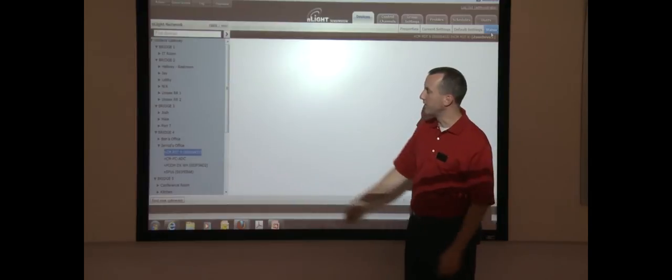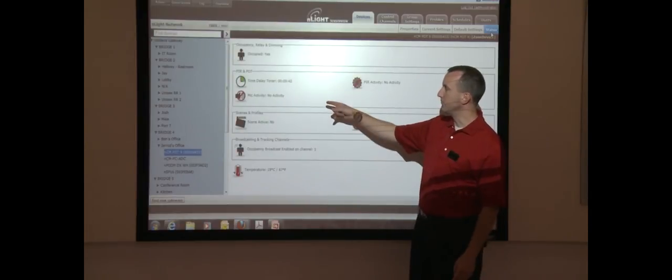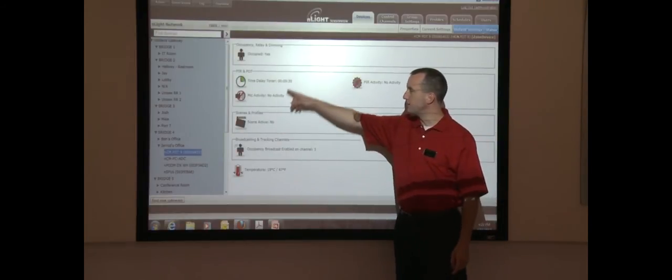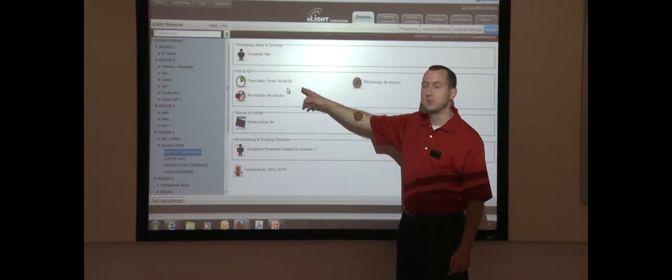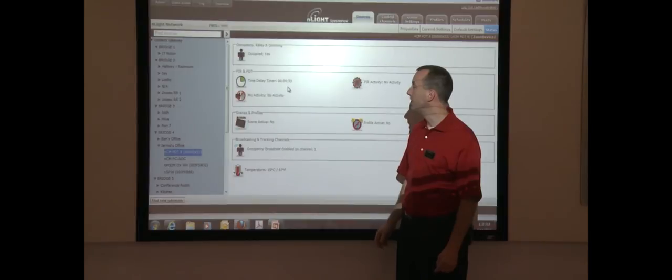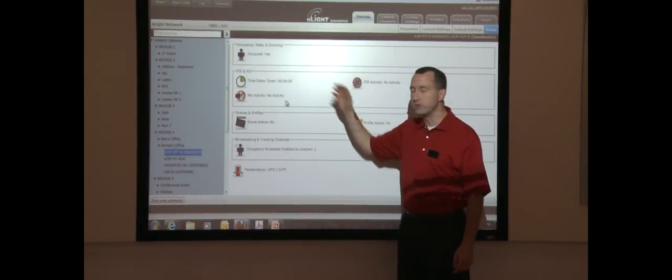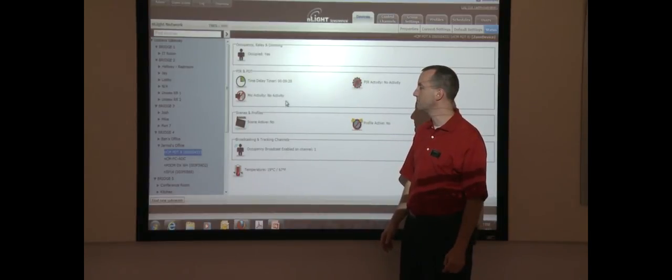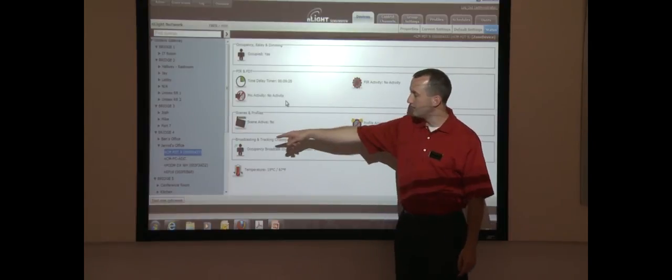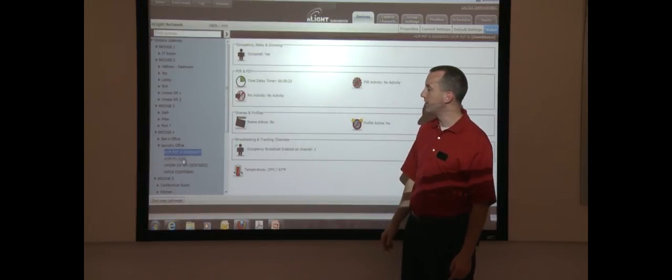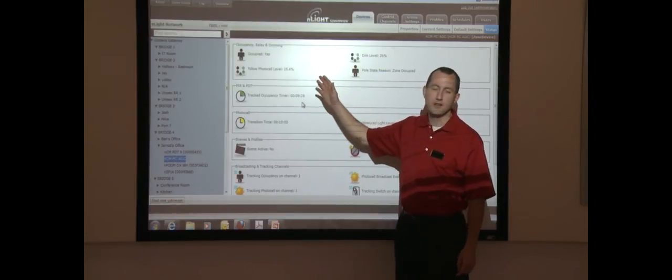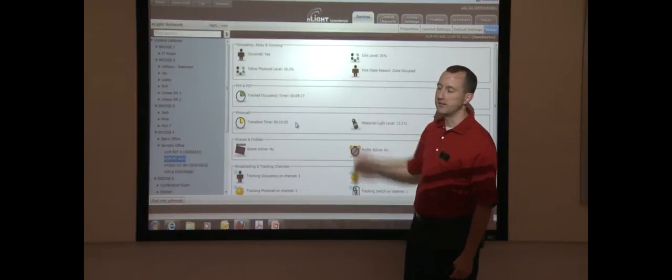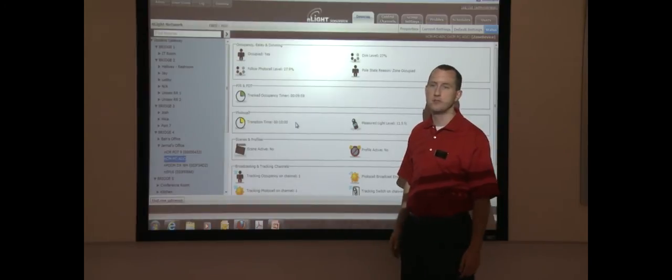If we go even deeper, we can look at status. In real time, we can see that in Jared's office here, he last moved 20 seconds ago because we see the actual PIR time delay counting down. If he was talking, we would see the microphonic icon twitch. If you go into a photo cell, you get even more information about what the current light level is, what the dim level of the device is. All this is tracked in real time.